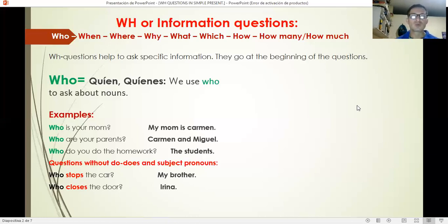Here's something interesting: questions without do/does and without subject pronouns. For example: Who stops the car? We don't know who stops the car, so there's no personal pronoun or auxiliary. It goes directly WH question plus the verb. Who stops the car? My brother. Who closes the door? Irina.